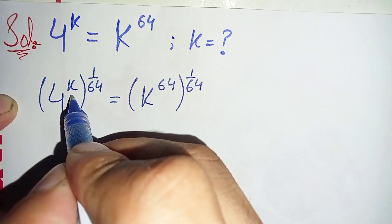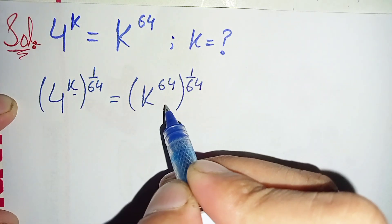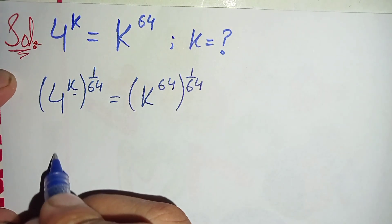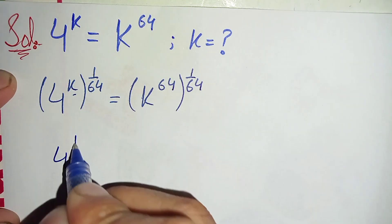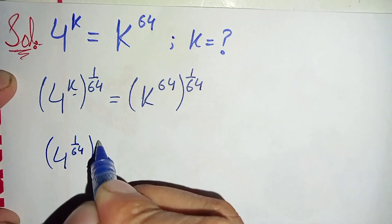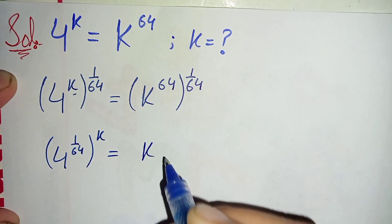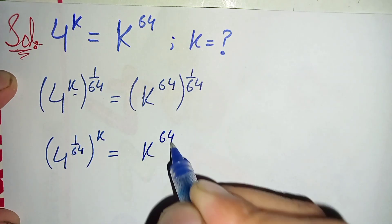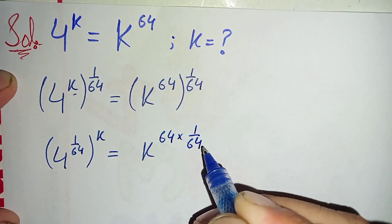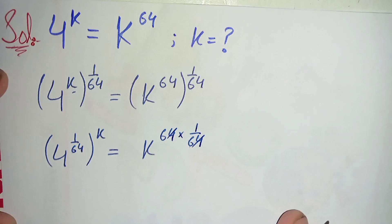On the left hand side, we will interchange the position of these two powers. On the right hand side, we will multiply these two powers with each other. This becomes 4 raised to power 1 over 64, raised to power k, is equal to k raised to power 64 times 1 over 64. The 64s cancel, leaving just k to the power 1.